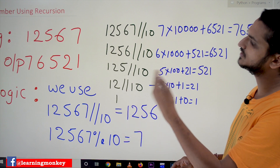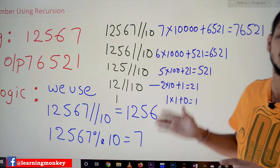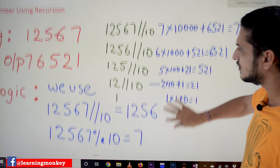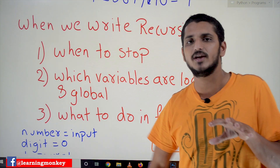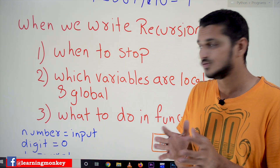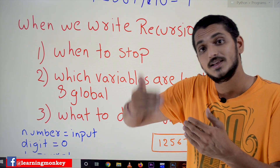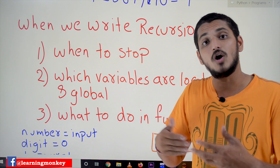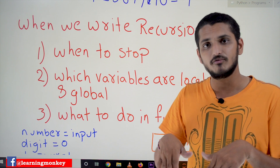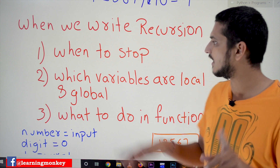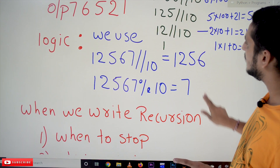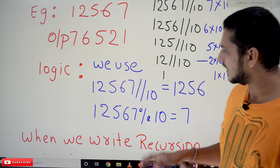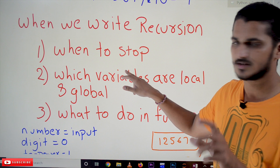We need to change 12567 to 76521 — this is how recursion executes. Let's come to the coding and understand how this logic is implemented. For any recursion program, the first thing you have to identify is the logic to stop calling the recursion. Recursion means a function calling itself — we have to identify when to stop. In our example, we stop when we get a single digit.